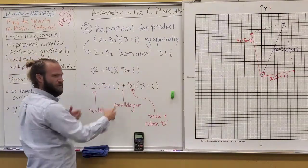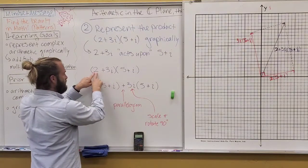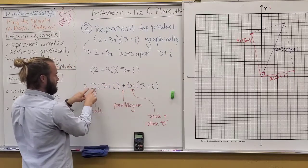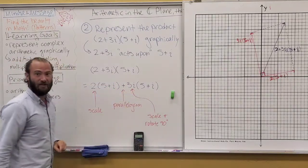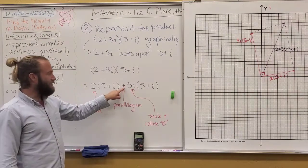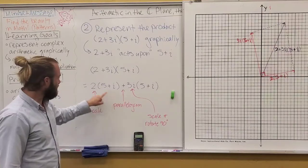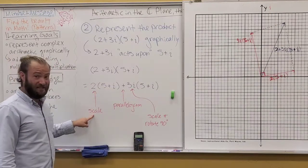If we were to actually do distribution like when we learned when we were younger, you could think of 2 plus 3i as distributing the 2 and then distributing the 3i. So, you can think of it as 2 times 5 plus i plus 3i times 5 plus i. Now, what we can see is if you add two complex numbers, it has the parallelogram rule, right? If you multiply a real number here, all it does is scale it.